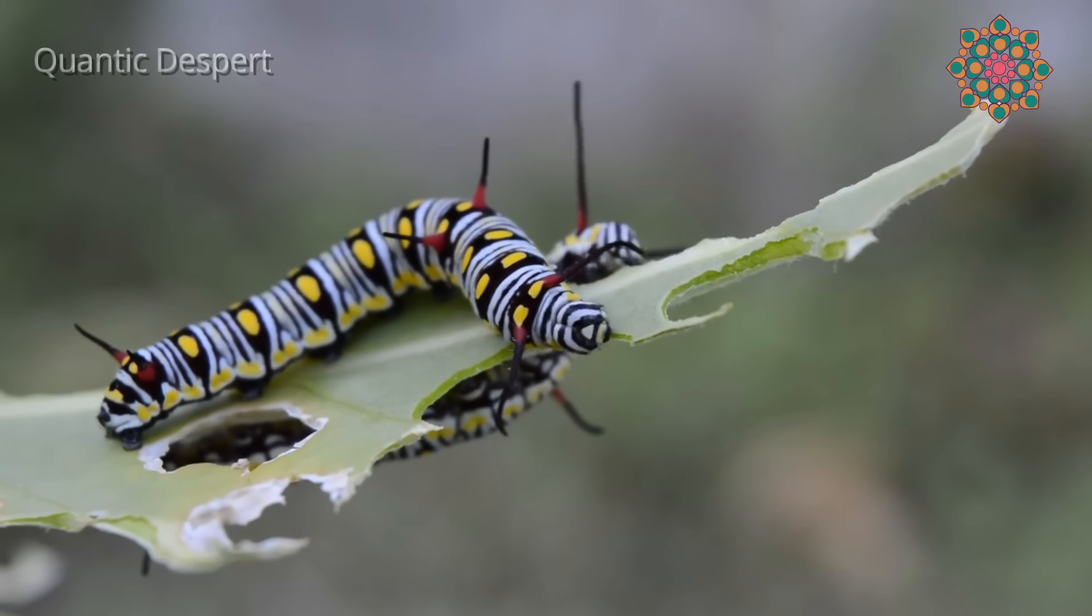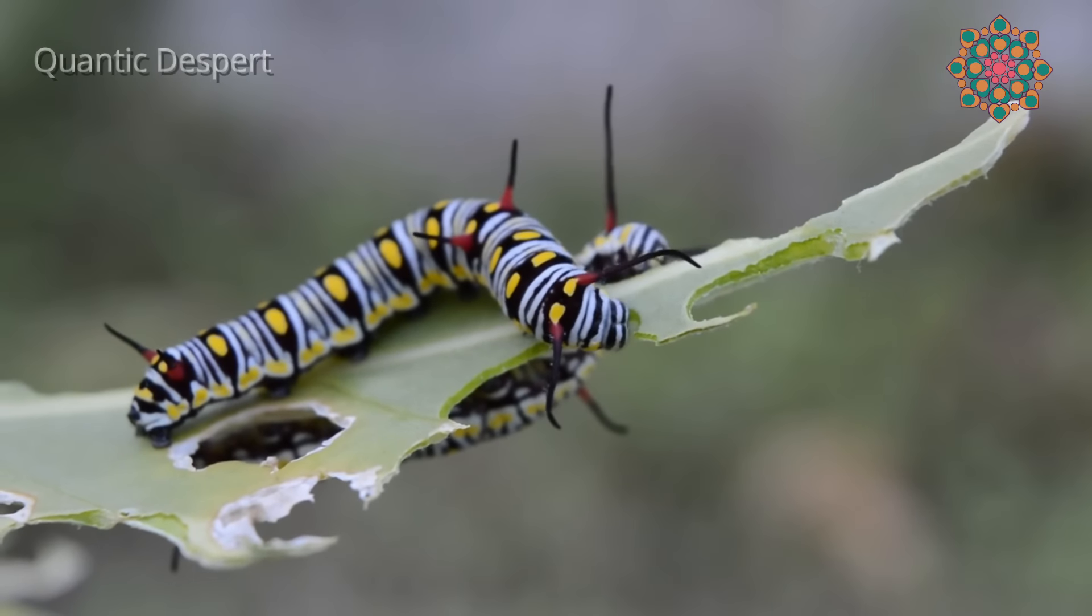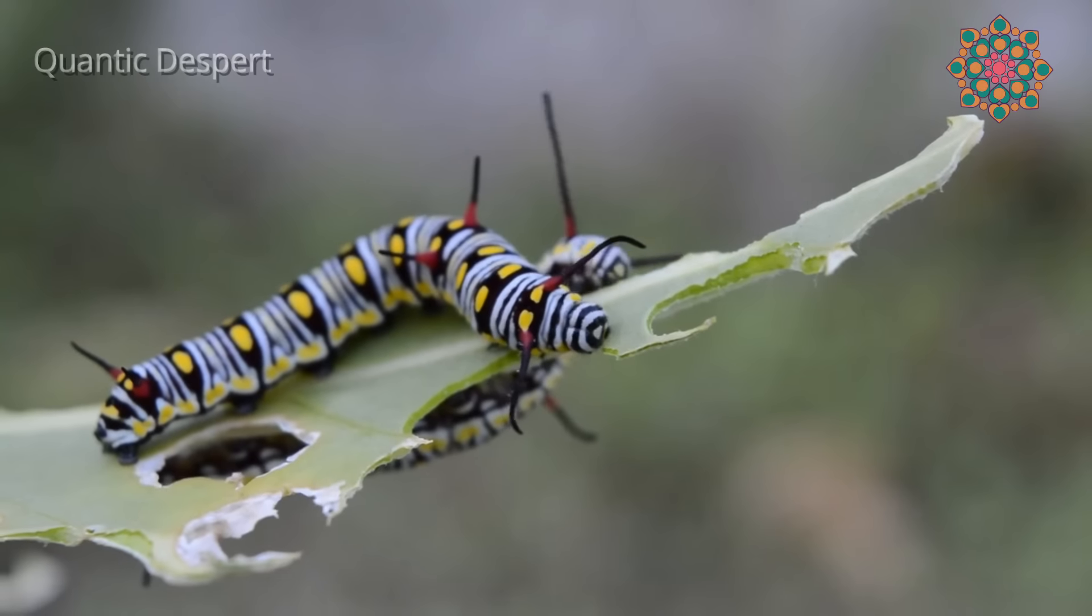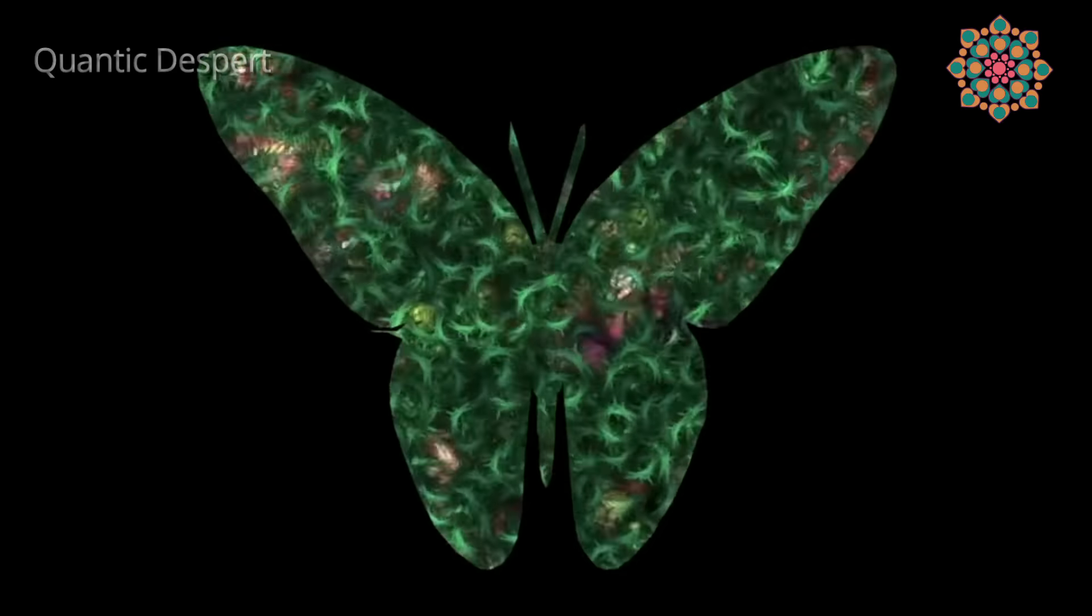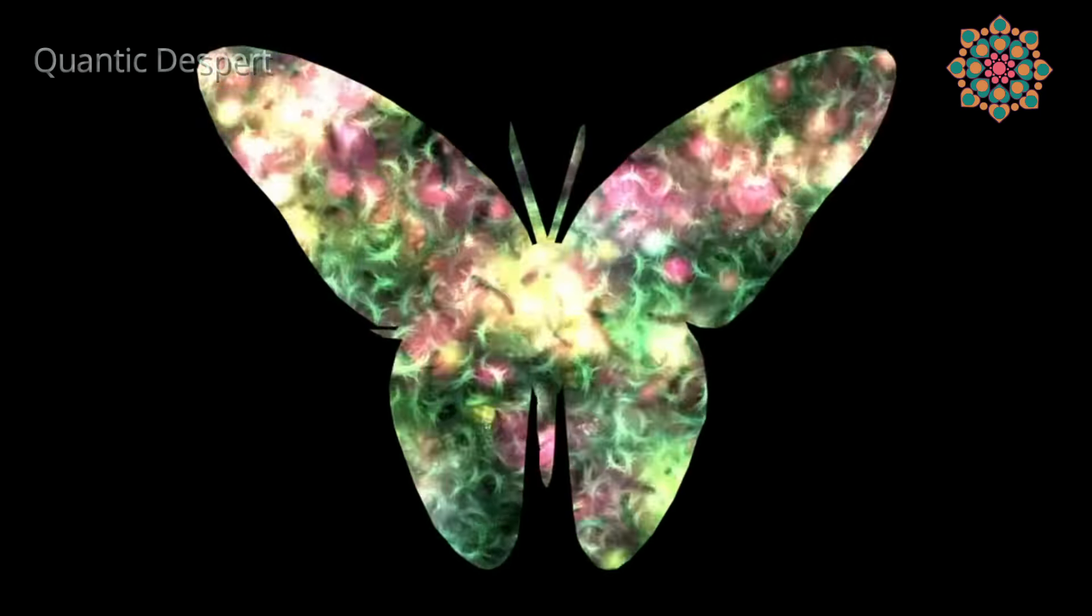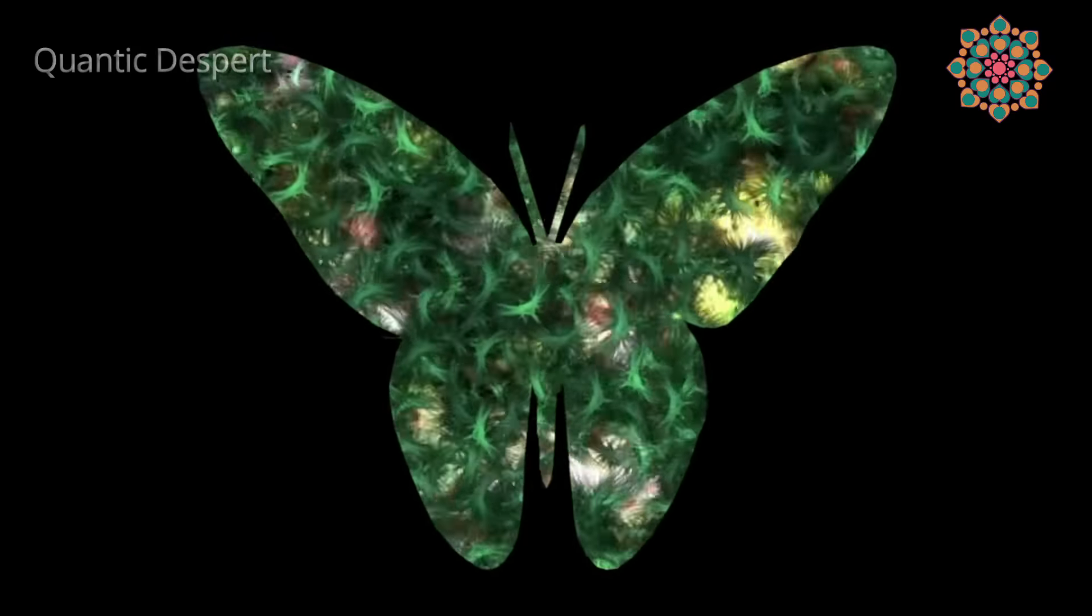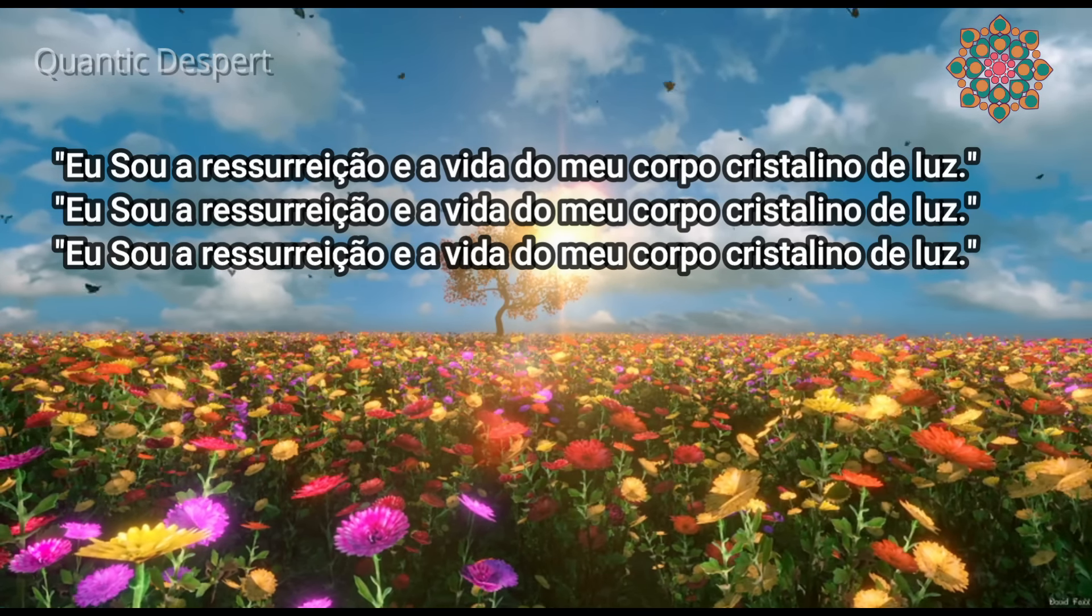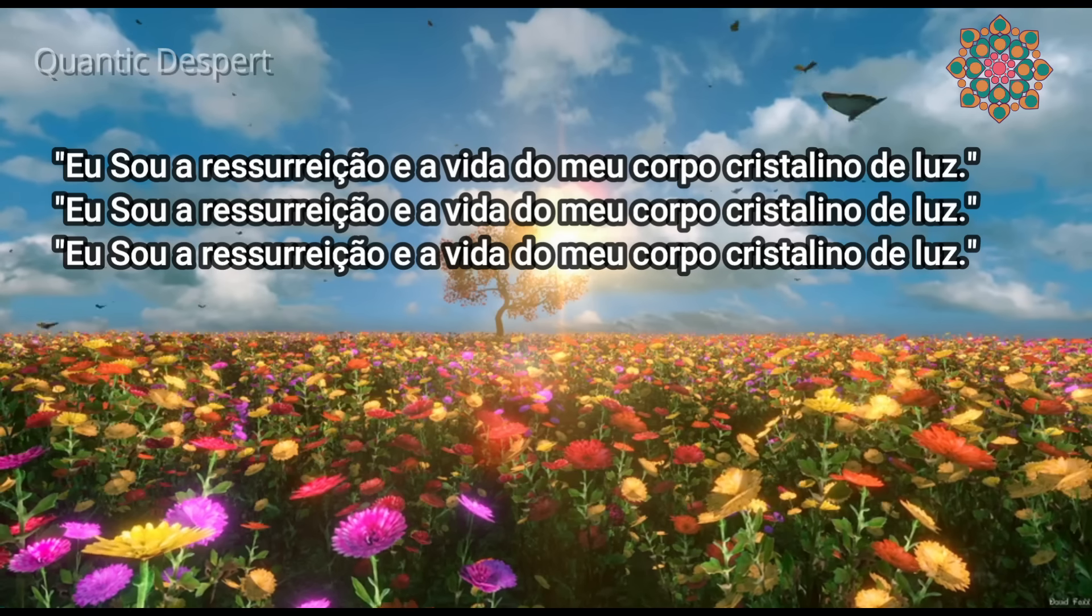Metamorphosis is the concrete proof of transformation. Nature shows the incredulous that this is possible and necessary when it makes us see with clear eyes a caterpillar transform into a butterfly to fly and color nature. If before the caterpillar ate plants, now as a butterfly, it helps pollinate the flowers to multiply the plant species. You are exactly in the phase of metamorphosis. You are ceasing to be a parasite of Earth to transform into an integral part of her.